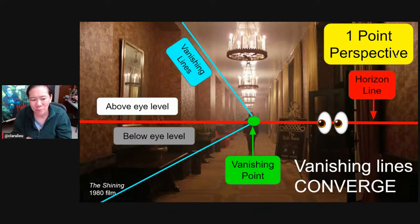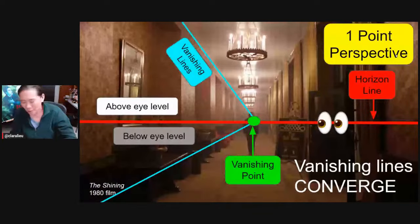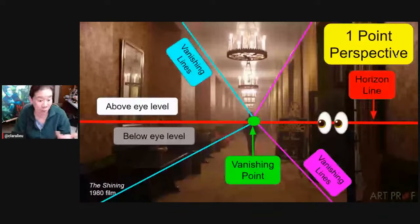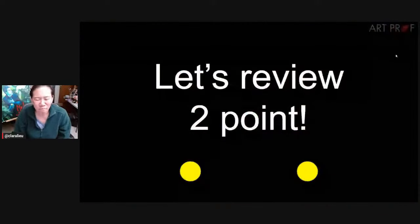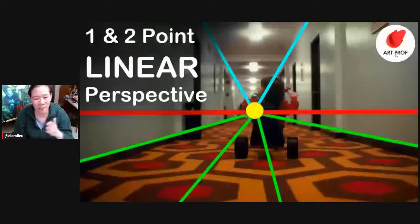Linear perspective is the one circumstance in visual art where it really is correct or not — it's right or wrong. That's why measuring is helpful. I don't like rulers, so I tend to use a piece of string with a pushpin. Now let's look at two-point — review that lecture if you haven't had a chance to dig into it.